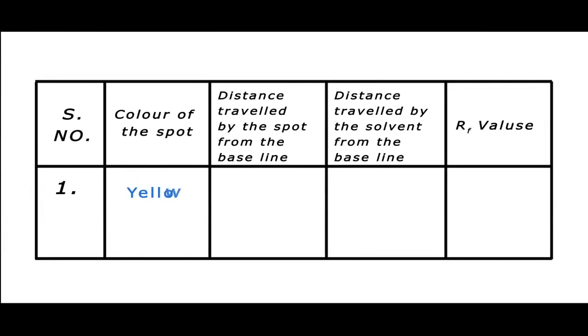Color of the spot: yellow. Distance traveled by the spot from the baseline is 7.2 cm. Distance traveled by the solvent from the baseline is 7.4 cm, and its respective RF value is 0.97.